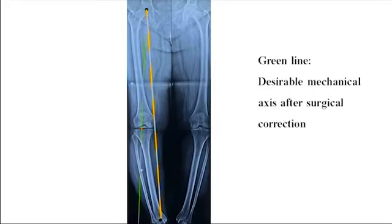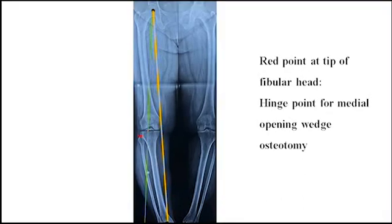A line is drawn from the center of the femoral head distally, passing through Fujisawa's point. This line will distally represent the ankle center after corrective osteotomy.